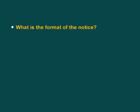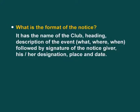This is a very important part of notice writing — what is the format of the notice? We have to understand this. It has the name of the club, heading, and description of the event. The description of the event includes what, where, and when — all three W questions. And importantly, this is followed by a signature of the notice giver, that is his or her designation, place, and date. The format is a very important component of notice writing.